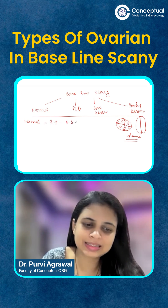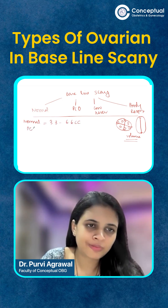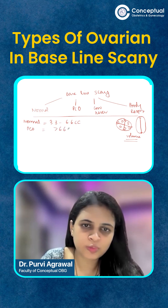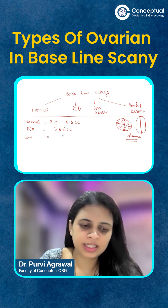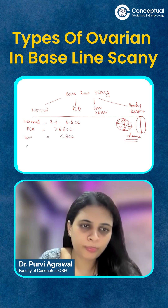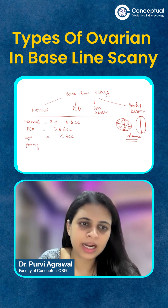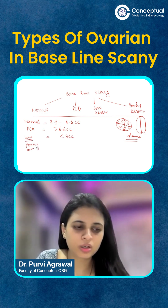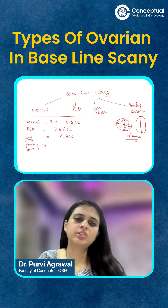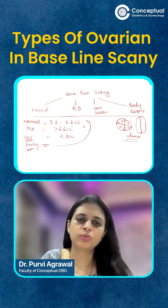If we have a normal ovary, the volume is 3.3 to 6.6 cc. If we have a polycystic ovary, it is more than 6.6 cc. If we have a low reserve ovary, it is less than 3 cc. A poorly responding ovary and a low reserve ovary are two different things. A poorly responding ovary can be of any volume.